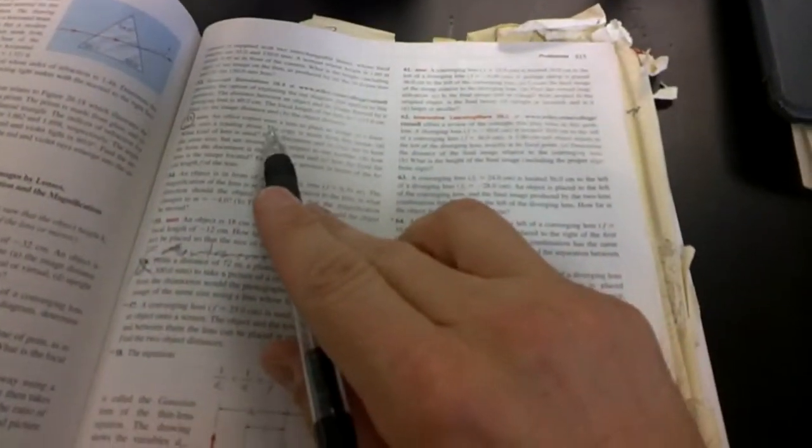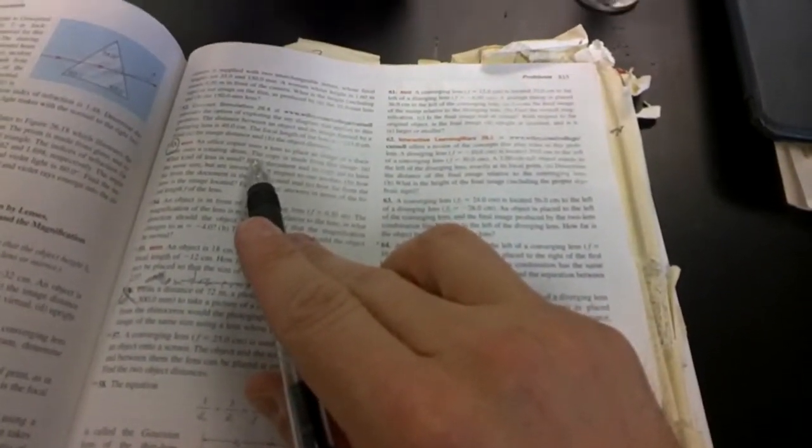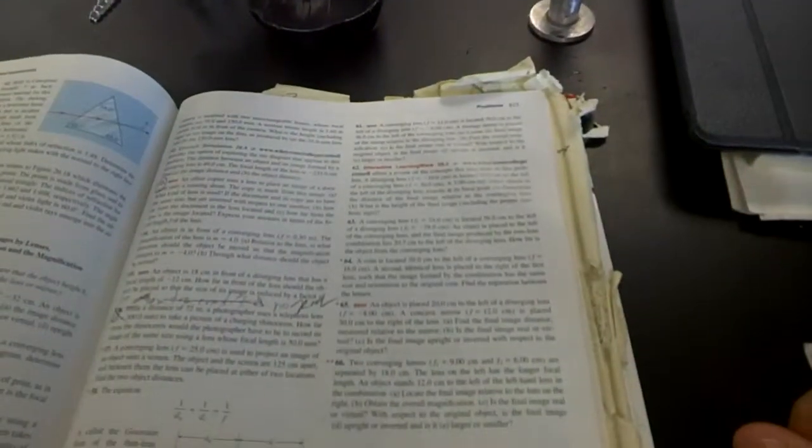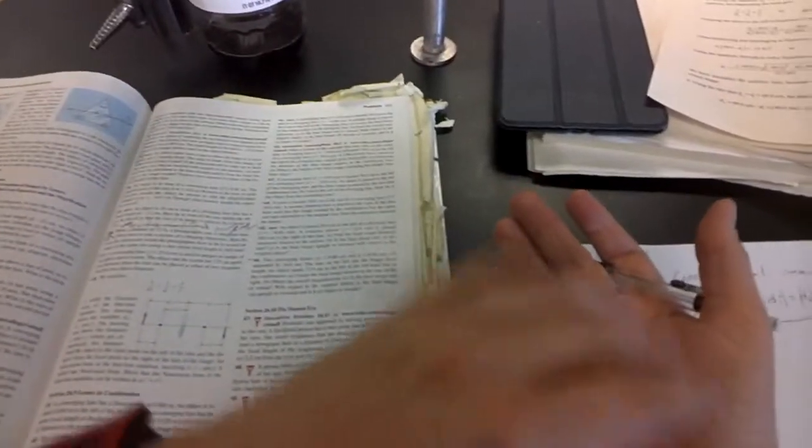This is Chapter 26, number 53, all about a copy machine. It says a copier uses a lens to place an image of a document onto a rotating drum. So what we've got here is we need a real image, because we're going to have whatever we're being copied, then some lens in the middle, and the light's going to go through the lens and then hit the drum.